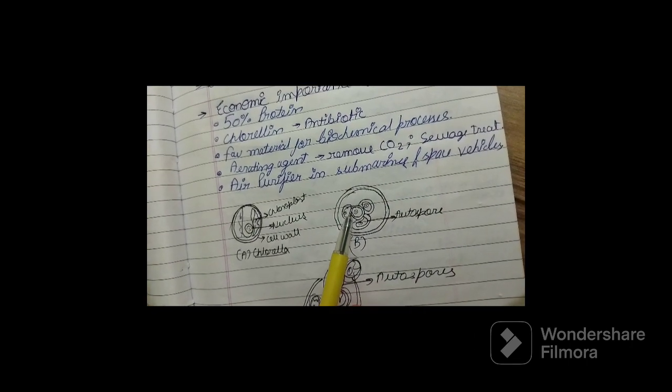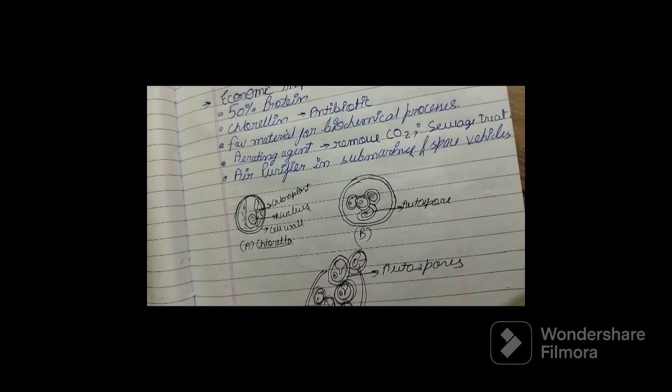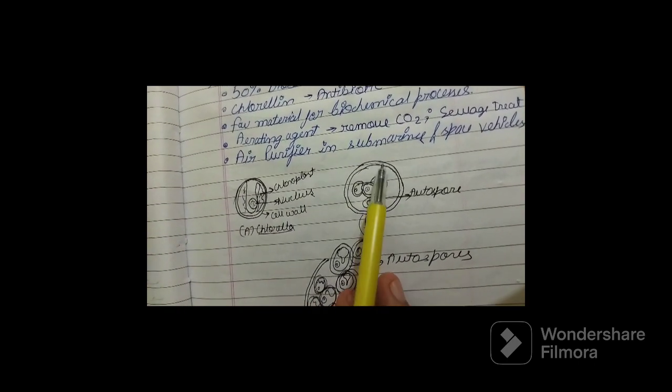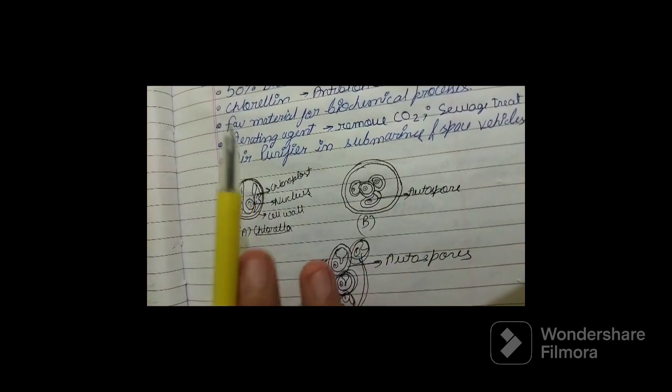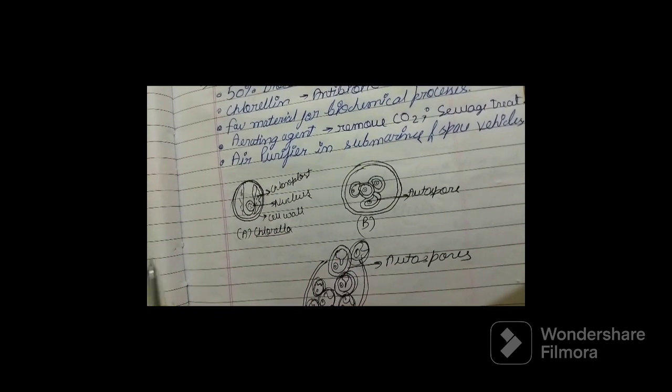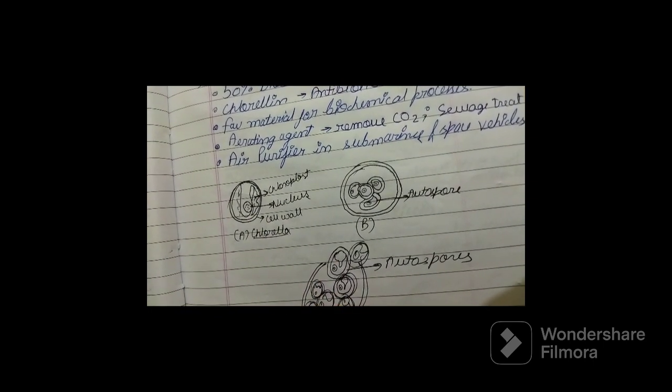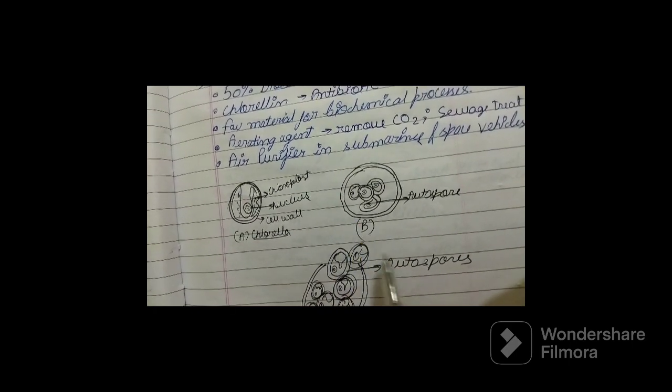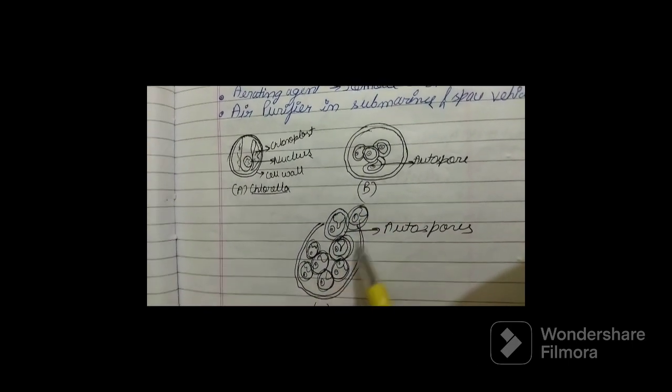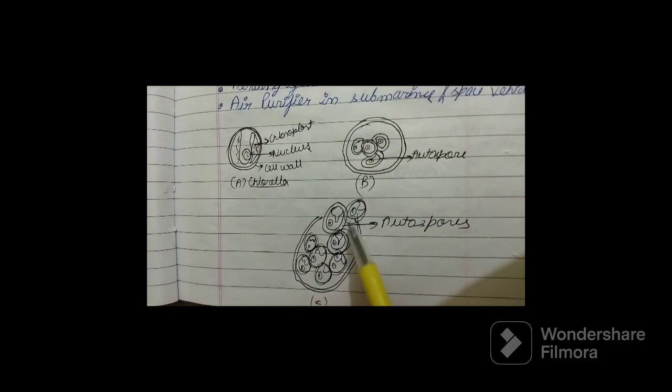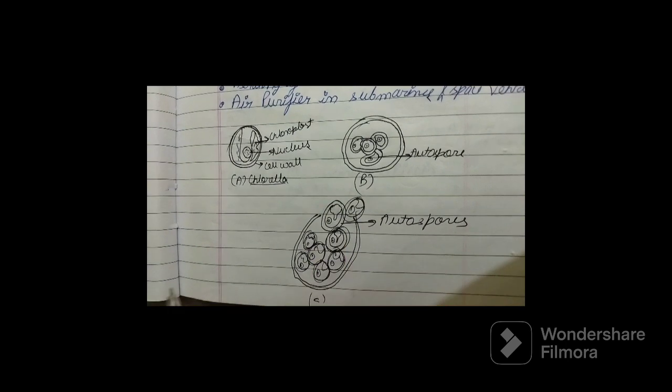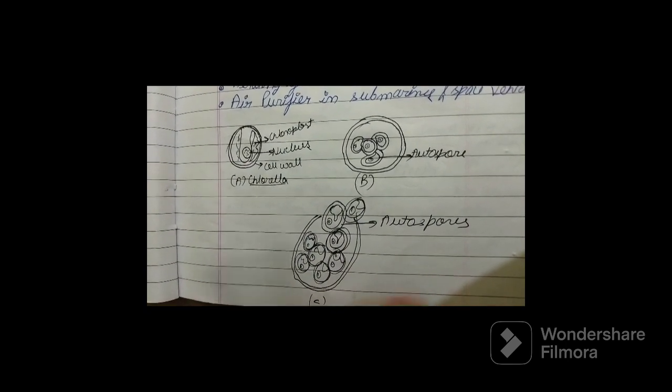What happens in this process is that during the formation of the autospores, the cell grows in size. First of all, it grows in size and then its content begins to divide. You can see here, these are your divided contents. It is 4, then it becomes 16, up to 16 in number they divide, which are your daughter protoplasts.